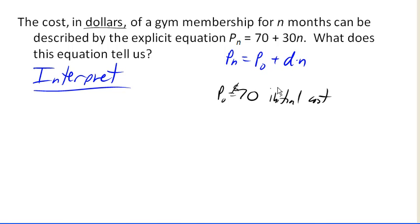Next, we can turn to our 30 in the equation. That 30, we can see corresponds with D, which was our common difference. The common difference tells us the amount that the population, or in this case costs, how much it increases by for each value of n.